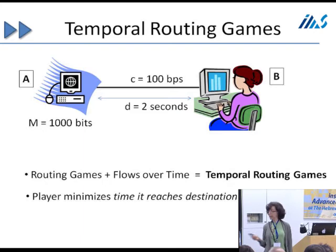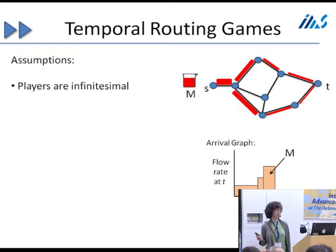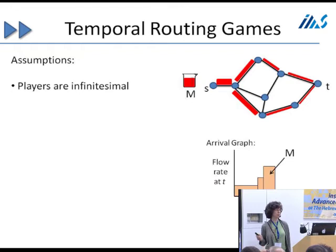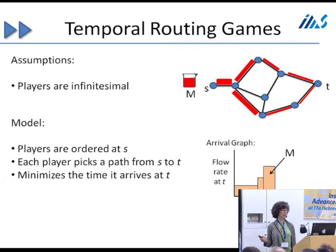What we're looking at are routing games in a flow-over-time setting, and we call these temporal routing games. The players are interested in minimizing the time they reach their destination. This is the first time this is studied, and it's typically easier to study infinitesimal players, so we'll assume our players are infinitesimal. We're going to be looking at arrival graphs: the flow arrives at some fixed beginning time using some paths, and as time progresses, more and more paths will be used. The players are ordered at the source, and each player picks a path from S to T to minimize the time it arrives at the destination.